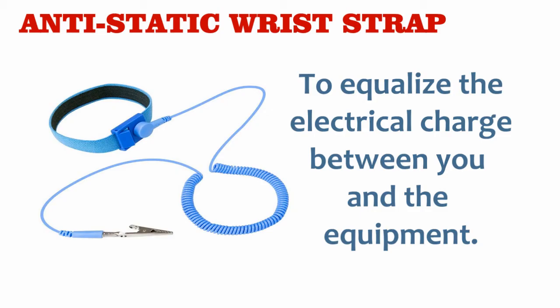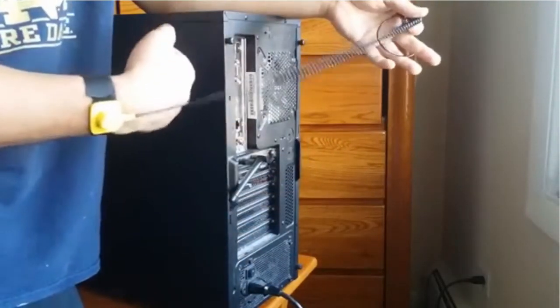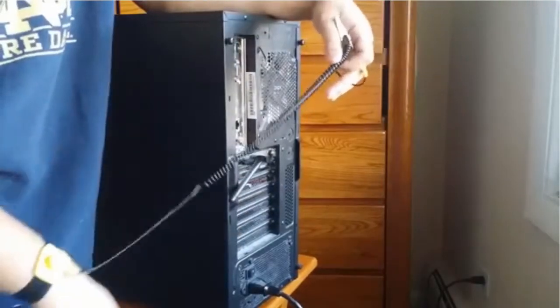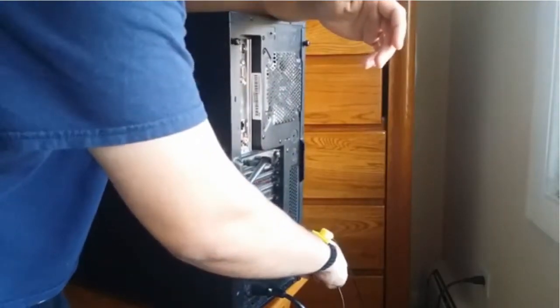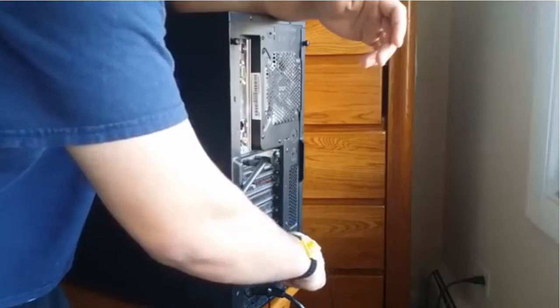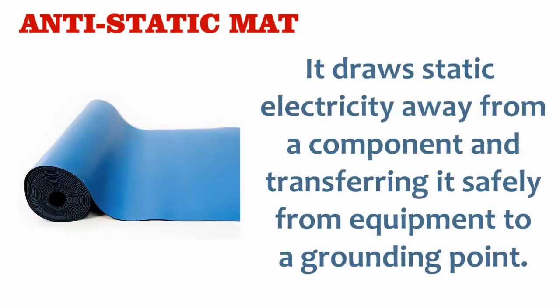Anti-static wrist strap: the purpose of this is to equalize the electrical charge between you and the equipment. The wrist strap has two parts. First, wrap the strap around the wrist and secure it using the snap. Second, snap the connector at the end of the wire to the wrist strap and connect the other end either to the equipment or to the same grounding point. The anti-static material is slightly conductive — it works by drawing static electricity away from the component and transferring it safely to a grounding point.